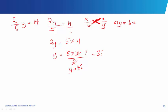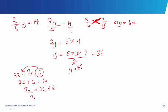Please memorize the multiplication tables from 2 to 12 — that's the basics of mathematics. Let's take another example: 22 equals 7x minus 6. Bringing like terms together, 22 plus 6 equals 7x, which gives 7x equals 28. Dividing both sides by 7, x equals 28 over 7, which is 4.